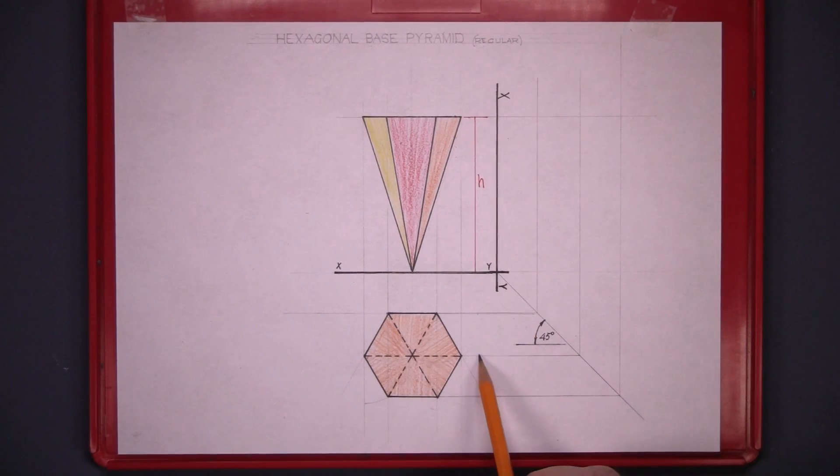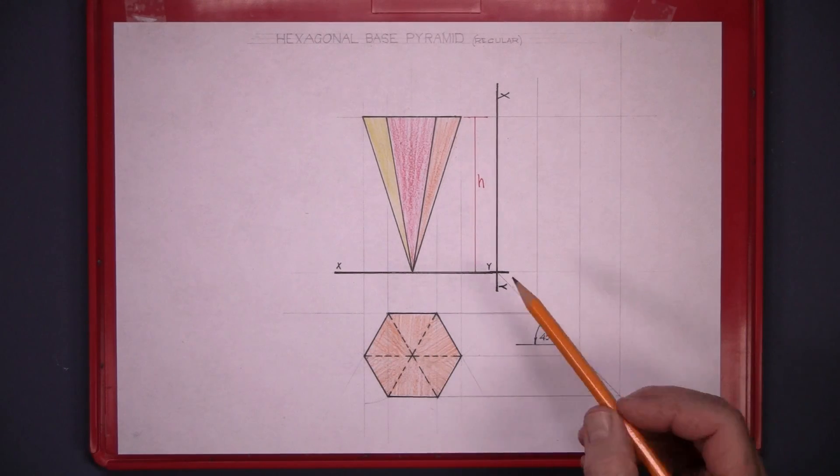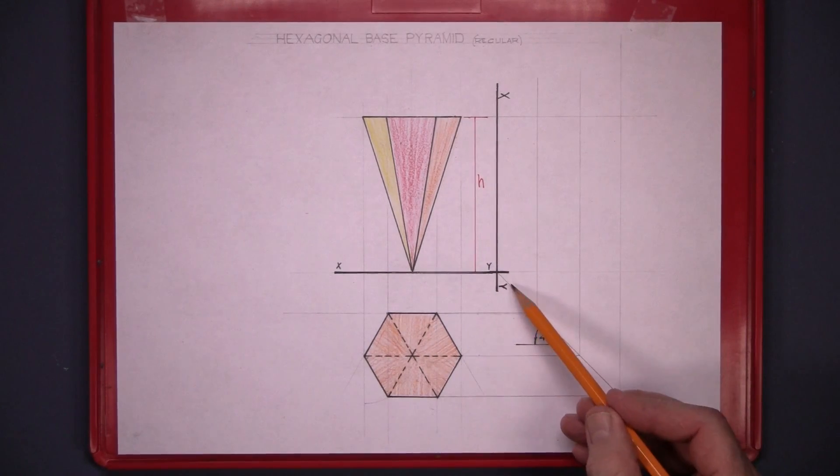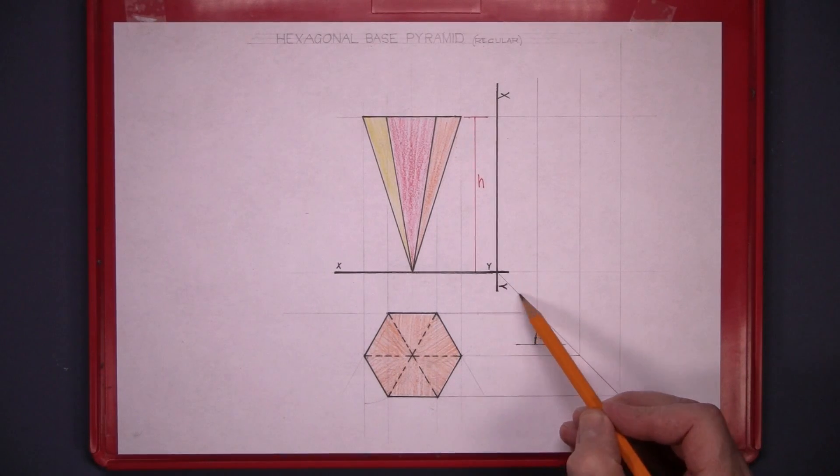So we're taking the distances in the plan and mark them out in the new elevation. This time I've drawn a 45 degree line from the junction of the two XY lines. That's at 45 degrees.